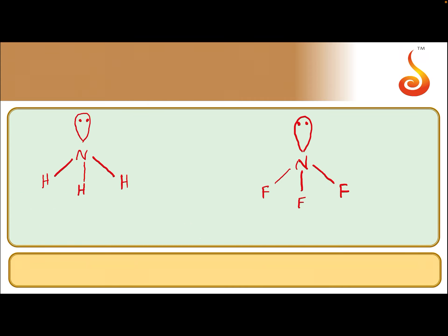Here, these two are the structures of the pyramidal shape with one lone pair for NH3 and NF3. So observing the dipole moment in NH3 — Nitrogen is more electronegative than Hydrogen, so the dipole moment of all three bonds is towards Nitrogen. The resultant dipole moment of these three bonds is in the same direction — upward. This is the resultant dipole moment of those three bonds.